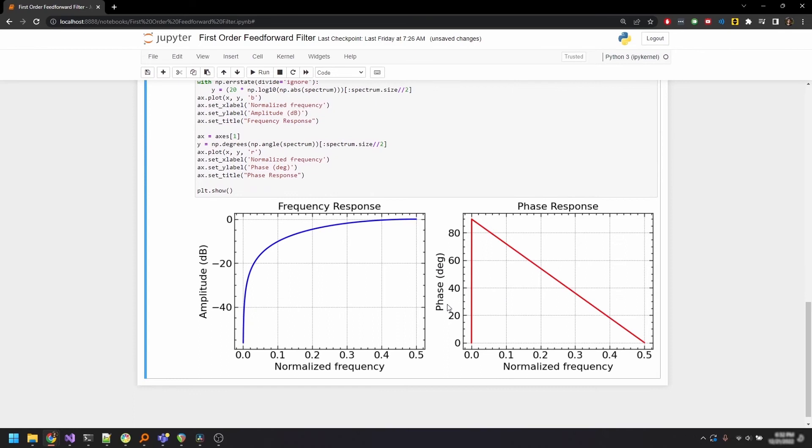This is quite interesting. With this set of coefficients, the filter has transformed itself into a high pass filter for a change. Lower frequencies are attenuated, and higher frequencies are passed through. The phase response, as expected, is linear because the coefficients are symmetric. But it goes from a 90 degree phase shift at 0Hz to 0 degree phase shift at the Nyquist.